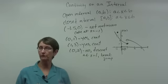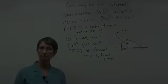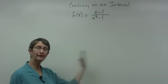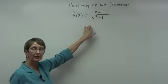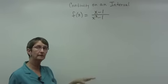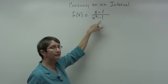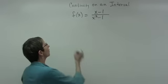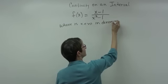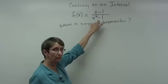Now we're going to look at a function defined by a formula and determine where it might be discontinuous and then examine it on intervals. When working with fractions, you cannot have a zero in the denominator. So we need to find where the denominator equals zero. The denominator factors as (x minus 1)(x plus 1), so there are problems at x equal to 1 and x equal to negative 1.